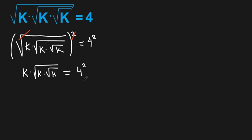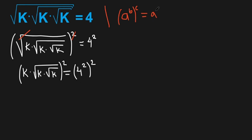Again, I'm going to raise both sides by 2. We also need to know this formula: A to the power of b, all to the power of c, equals A to the power of b times c. So we have k squared, and then let's eliminate here — what's left is k times square root of k. All this equals to 4 to the power of 4.